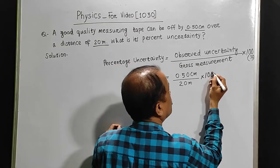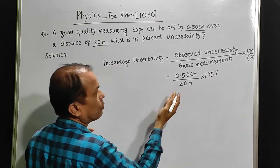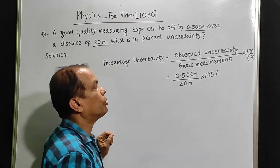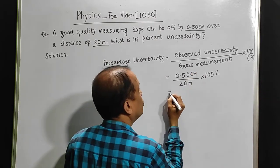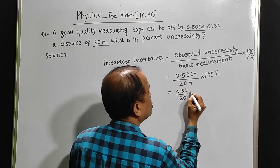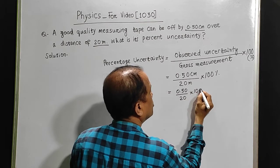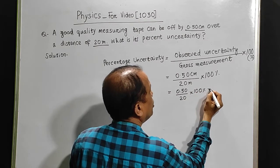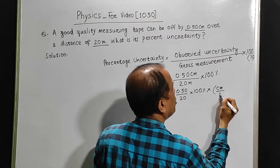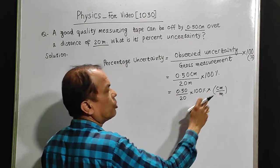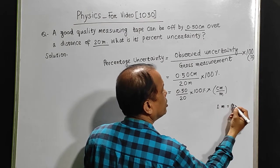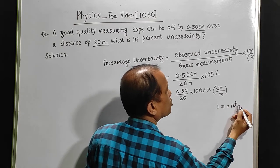We multiply this with 100 percent. Now we can calculate this by changing meter into centimeter or centimeter into meter, or taking a different approach: 0.50 upon 20 into 100 percent into centimeter upon meter. We know that one meter is 100 centimeters.